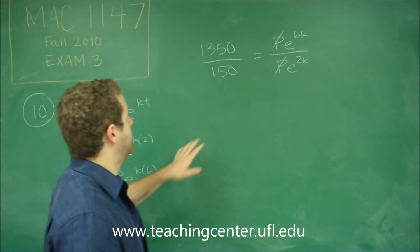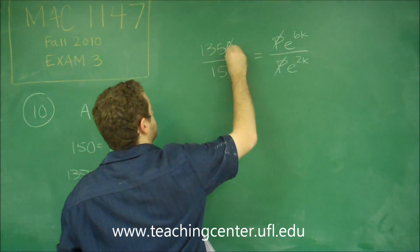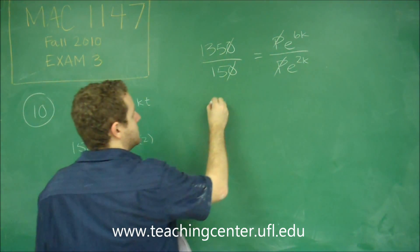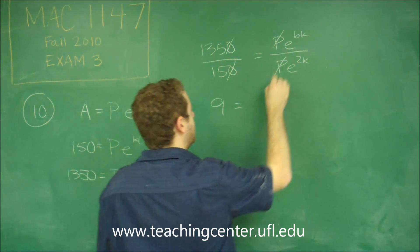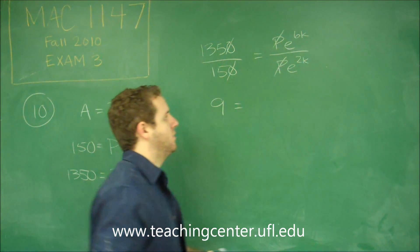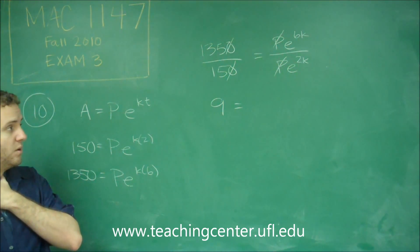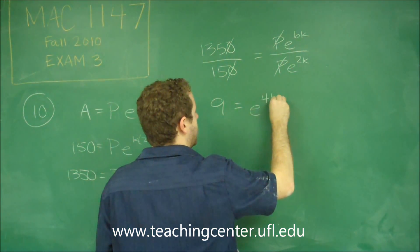So, we need to do a couple of different things here. First of all, if you divide this, the zeros cancel out and 135 divided by 15 is going to be 9. On this side, we have E to the 6K over E to the 2K. Remember that if you have exponential terms with the same base, when you divide them you subtract the power. So 6K minus 2K gives you E to the 4K.